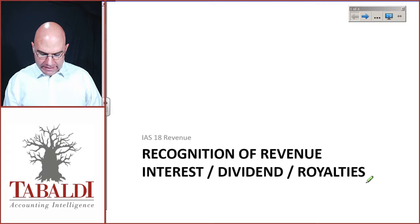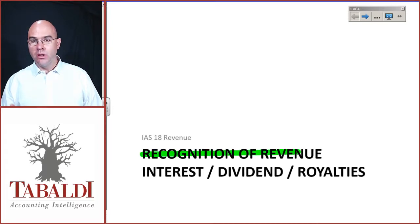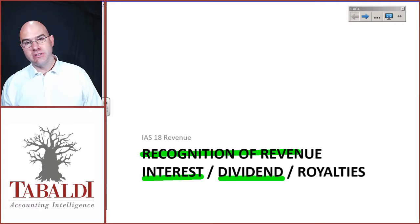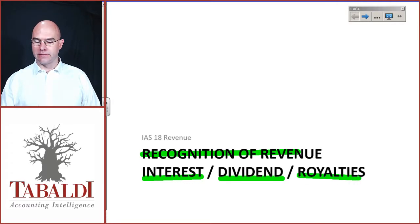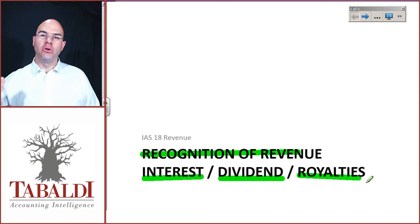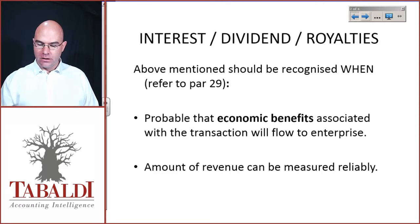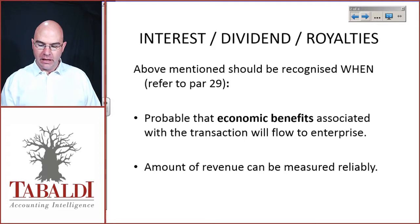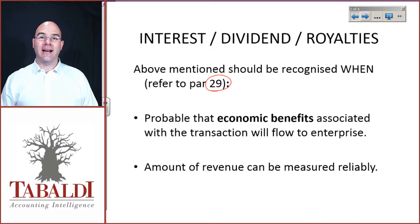Welcome. Today we're going to be discussing recognition of revenue, but purely revenue from interest earned, dividends received, or royalties received. These all fall under the category where you are receiving revenue from letting other people use your assets. Let's quickly discuss the basic principle for all three of these, which goes back to the framework but is also referred to in IAS 18 paragraph 29.